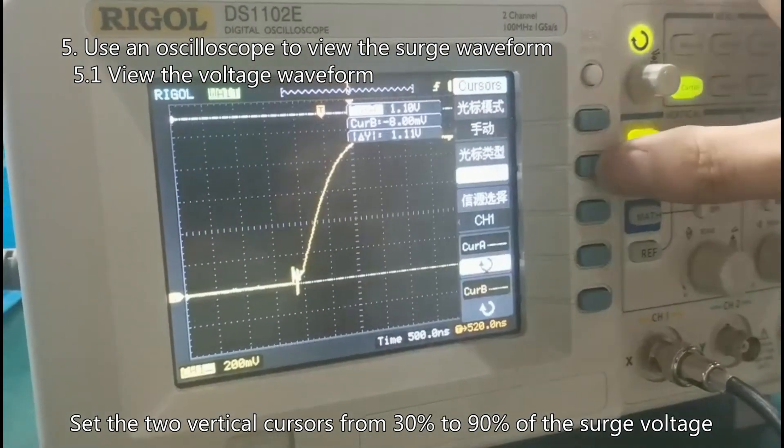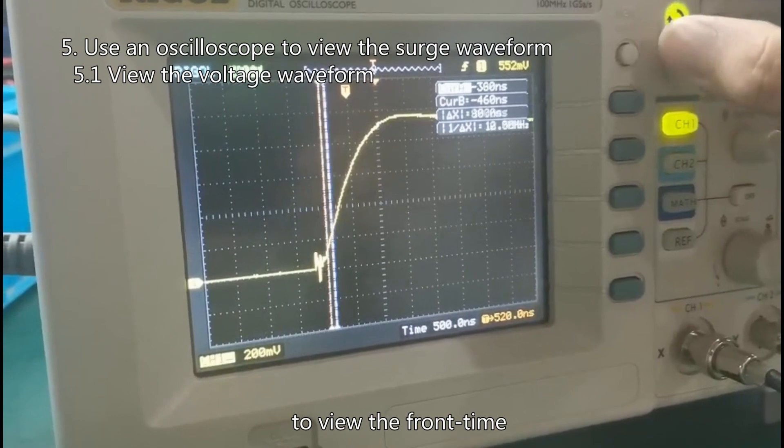Set the two vertical cursors from 30% to 90% of the surge voltage to view the front time.